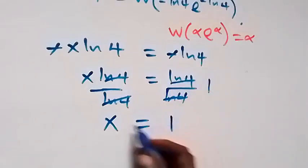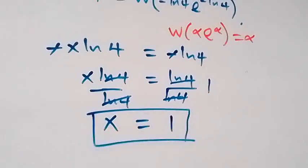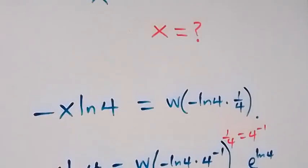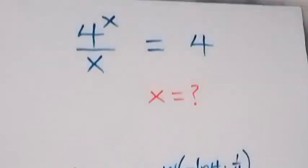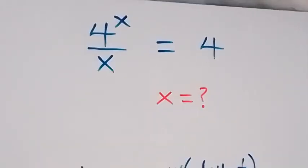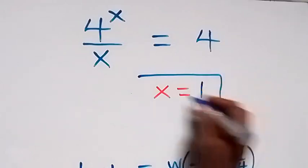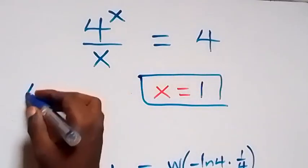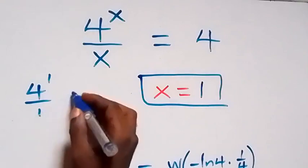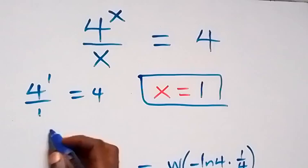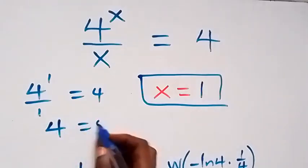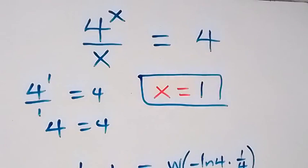So that means here we have x equals to 1. So the solution to the given problem: x is equal to 1. When we substitute here, this becomes 4 raised to power 1 over 1, which equals 4. And 4 raised to power 1 is 4, and 4 over 1 is 4, so 4 equals 4. Yes, the solution checks out.